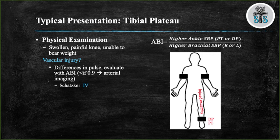Schatzker IV is defined as a medial tibial plateau fracture and has a high incidence of vascular injuries. These types of fractures are usually due to high energy injuries which can lead to damage to the popliteal vessels and the peroneal nerve. To perform ABIs, you take the highest systolic blood pressure between the dorsalis pedis and the posterior tibial artery of the injured extremity and divide that by the higher brachial systolic blood pressure between the right and left arm.